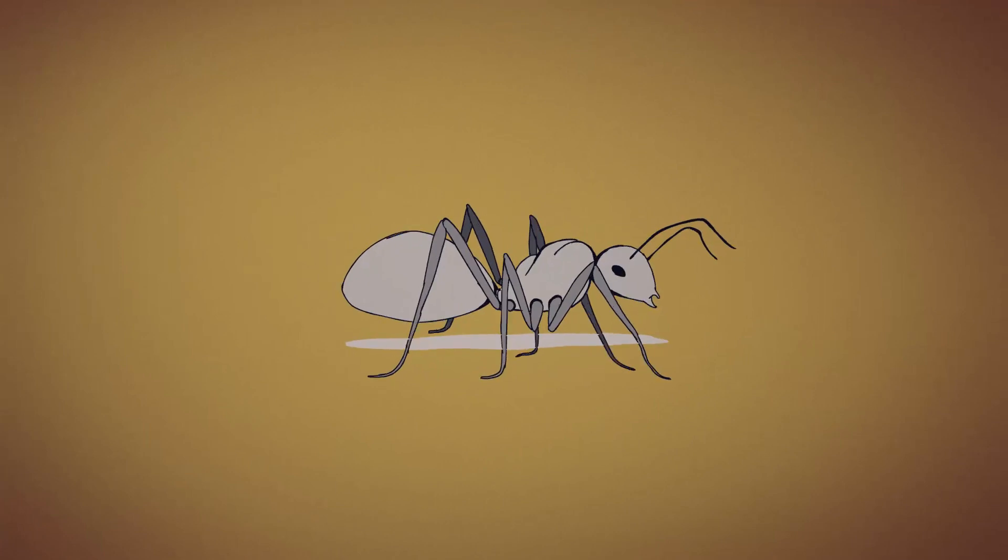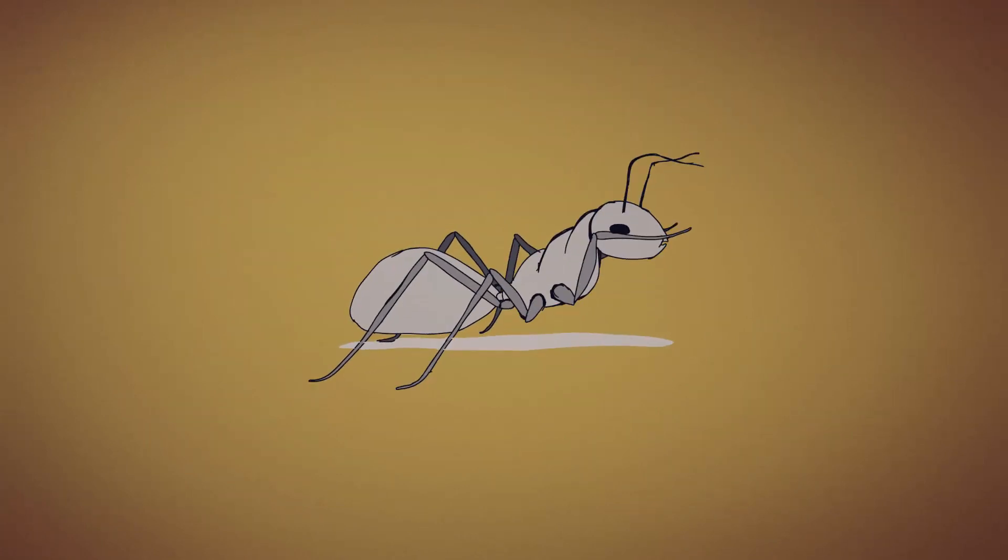When travelling at full speed, they use only four of their six legs by raising the front pair of legs. This way they don't get in each other's way, allowing them to travel at a very high stride frequency.